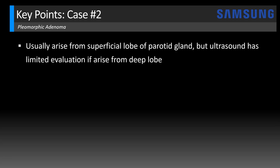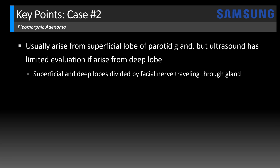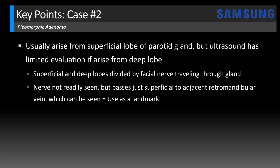Pleomorphic adenoma tends to arise from the superficial lobe of the parotid gland, making them great for ultrasound evaluation. When they less commonly arise in the deep lobe, they can be more difficult to fully visualize due to obscuration from the mandible. The superficial and deep lobes are divided by the facial nerve, which travels through the parotid gland. The nerve itself is not readily seen, but it passes just superficial to the adjacent retromandibular vein, which can be used as a landmark. If you see a parotid mass anterior to those vascular structures, that's a clue you're dealing with a superficial lobe mass.